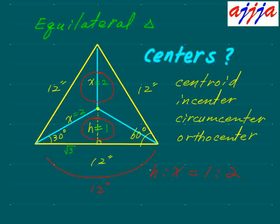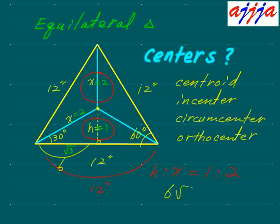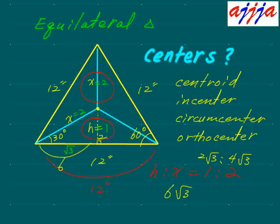The bottom base is 12, so half of that is 6. For the large triangle with base 6 and hypotenuse 12, the total height is 6√3. Now separating using the 1 to 2 ratio: the lower segment x is 2√3 and the upper segment h is 4√3, which together total 6√3.